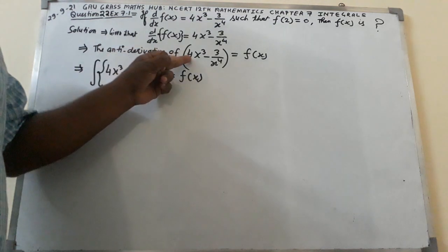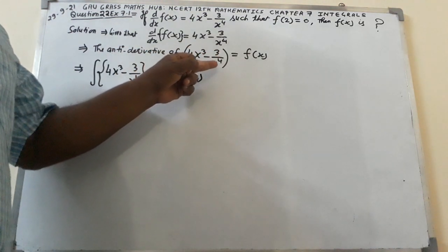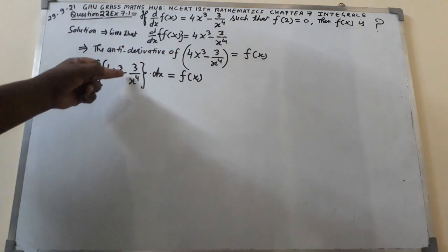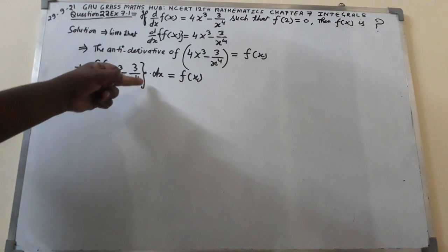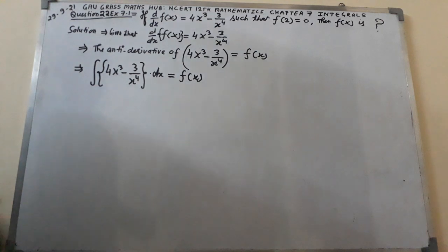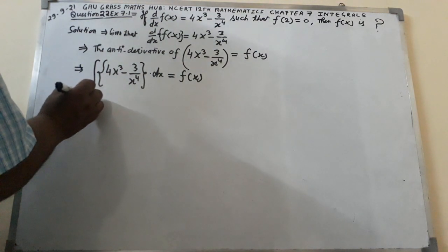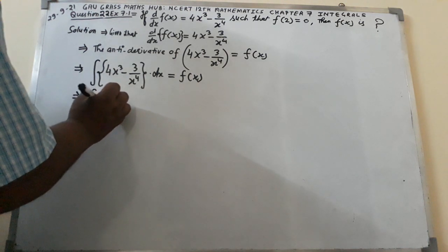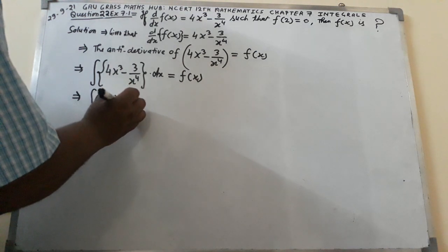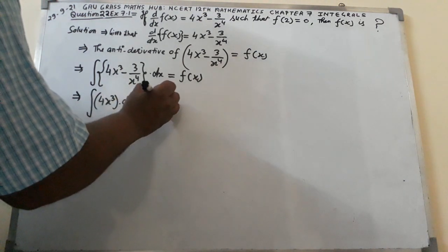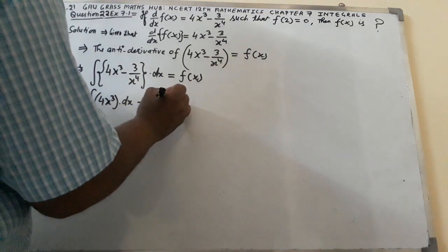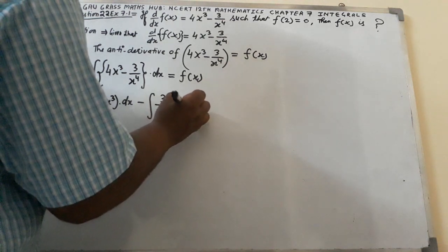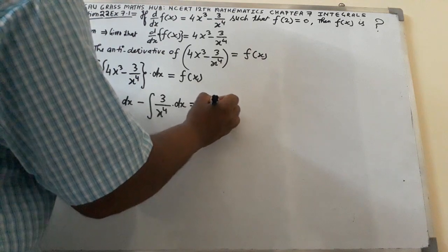The anti-derivative of 4x cubed minus 3 over x raised to the power 4 — that is, the integral of {4x cubed minus 3 over x raised to the power 4} dx — equals f of x. This implies: integral of 4x cubed dx minus integral of 3 over x raised to the power 4 dx equals f of x.